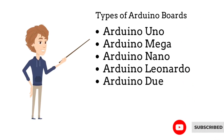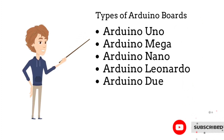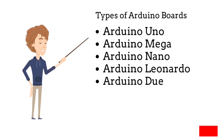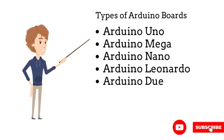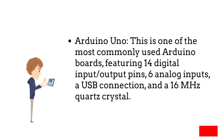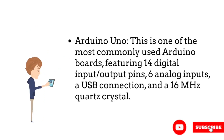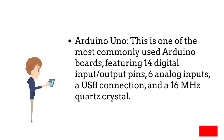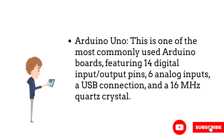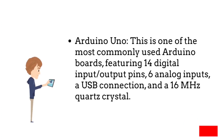Types of Arduino boards include the Arduino Uno, Arduino Mega, Arduino Nano, Arduino Leonardo, and Arduino Due. The Arduino Uno is one of the most commonly used Arduino boards, featuring 14 digital input/output pins, 6 analog inputs, a USB connection, and a 16 MHz quartz crystal.